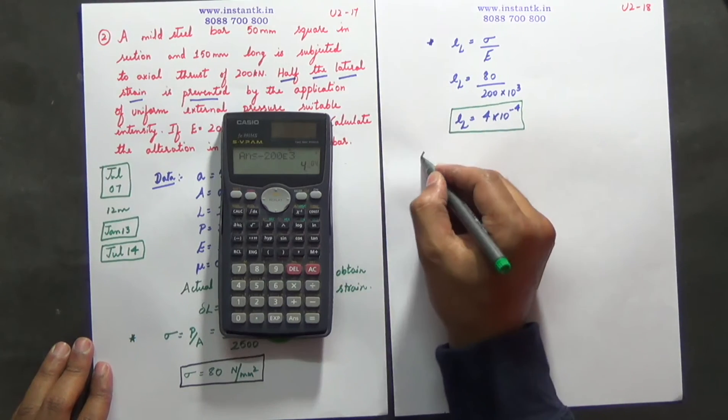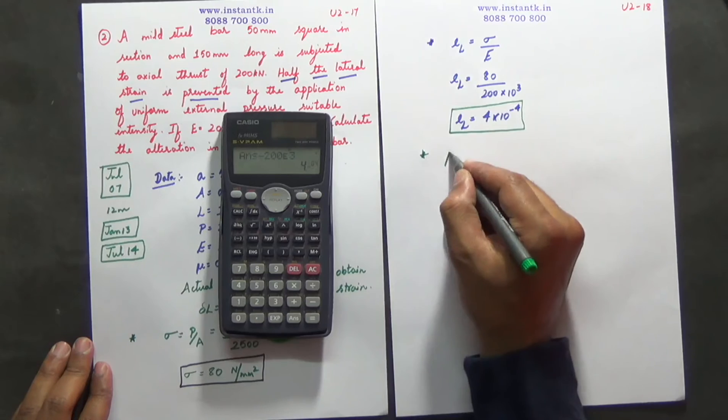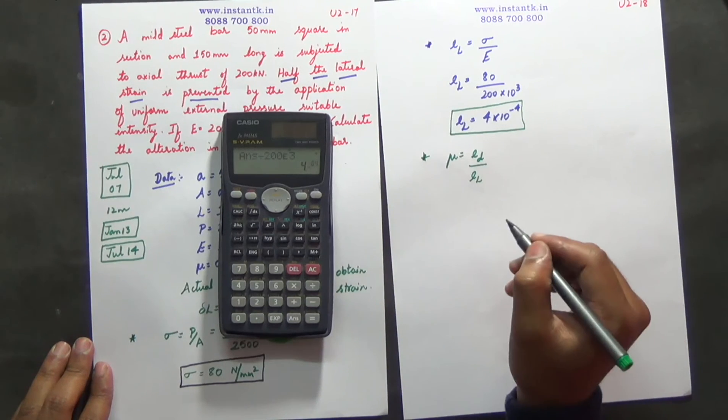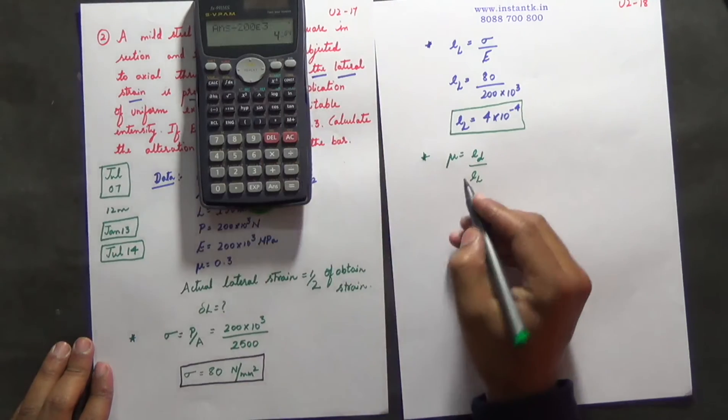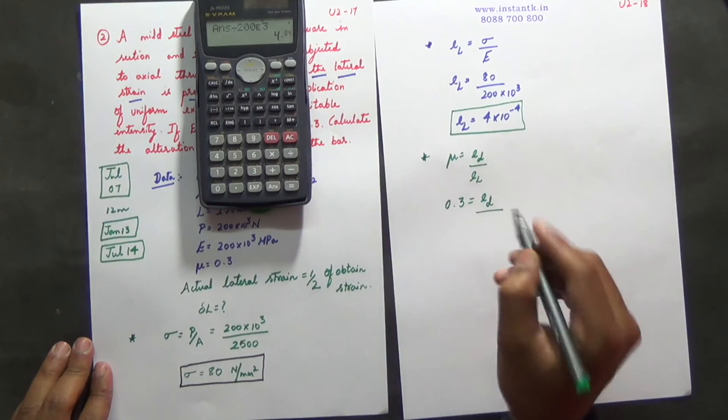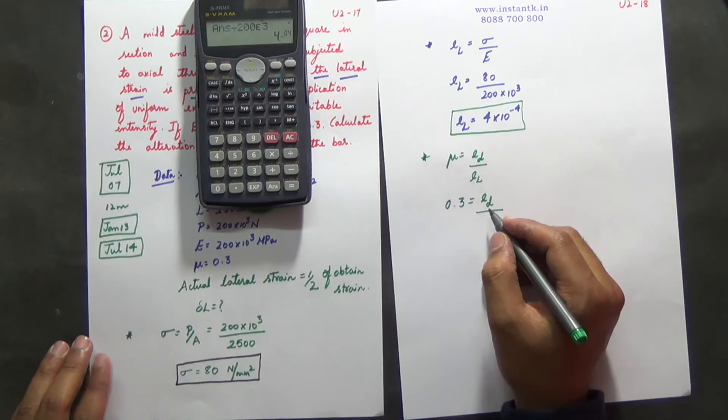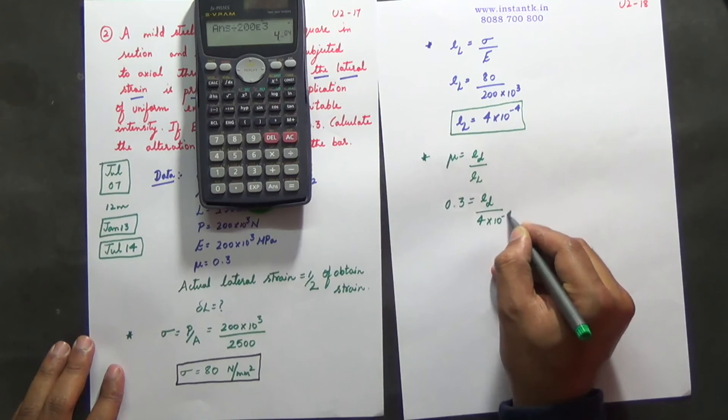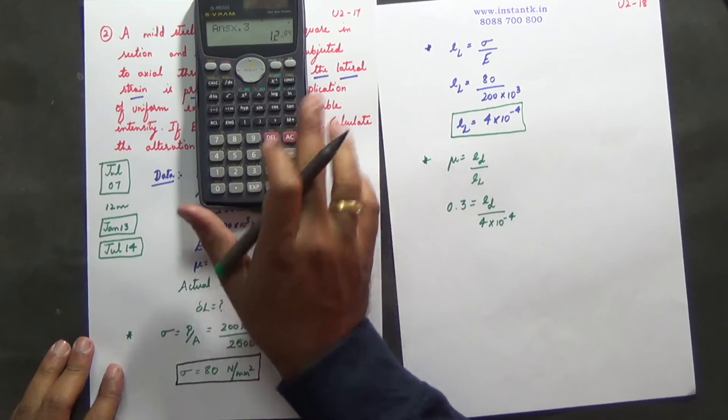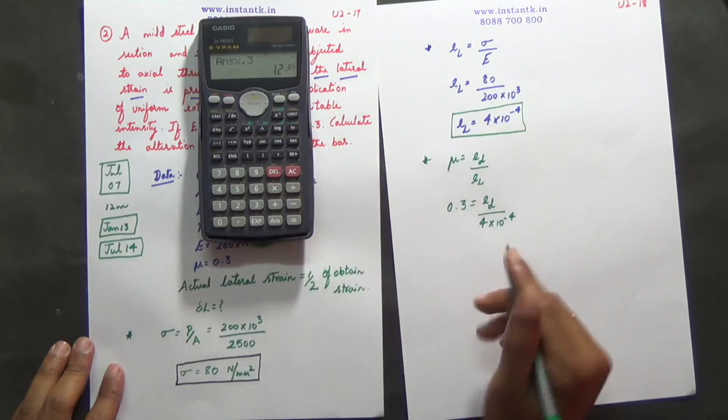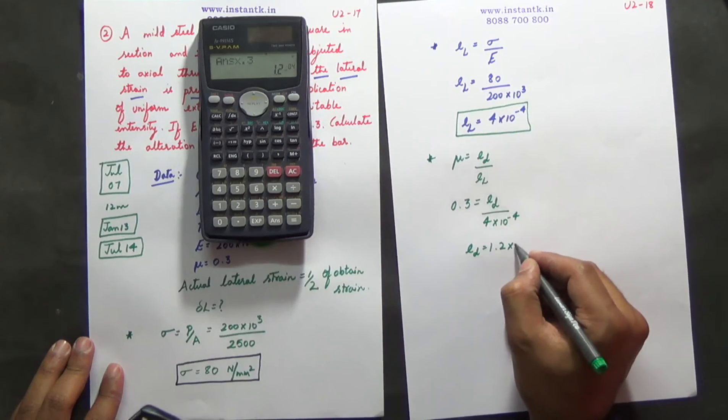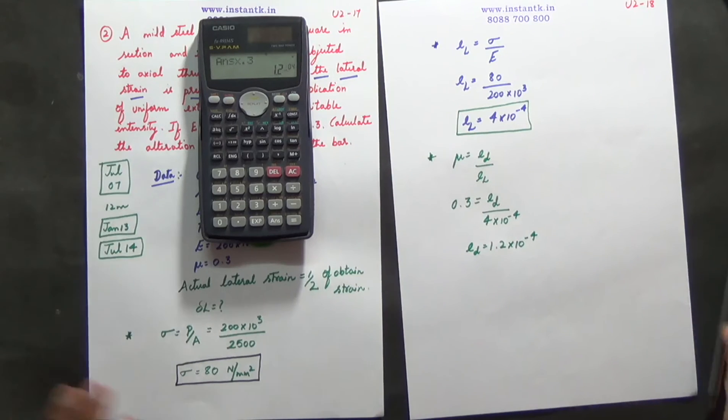Second step is over. Third step, mu is equal to ed divided by el. So mu 0.3 is equal to ed divided by el. El is 4 into 10 power of minus 4 into 0.3, so you got answer 1.2 into 10 power of minus 4.